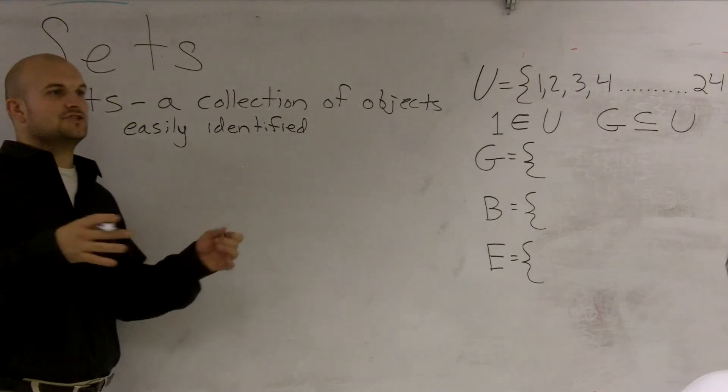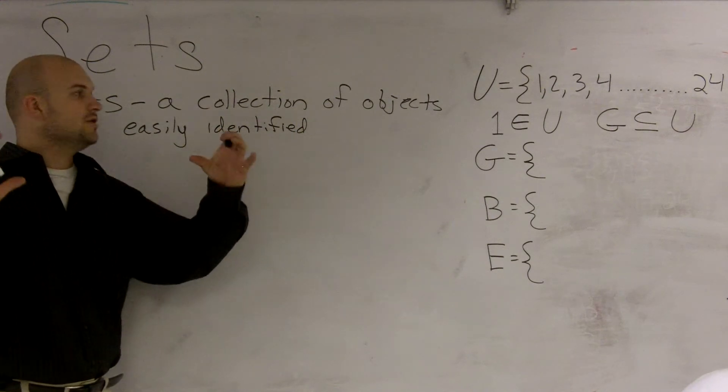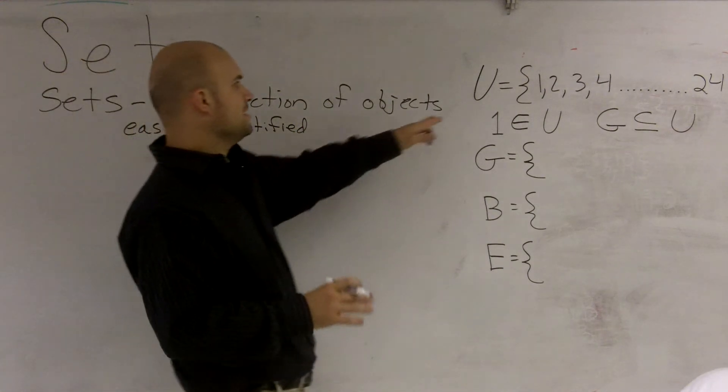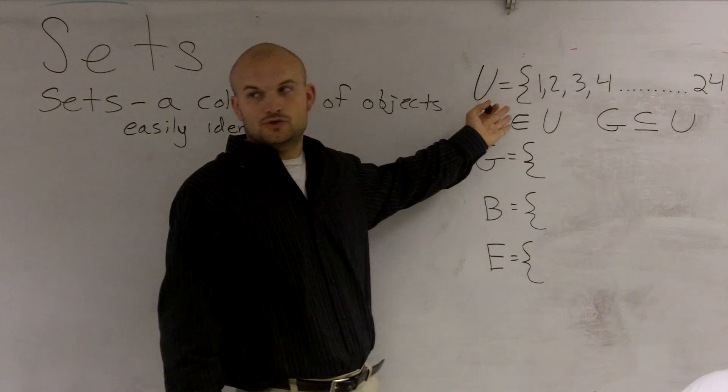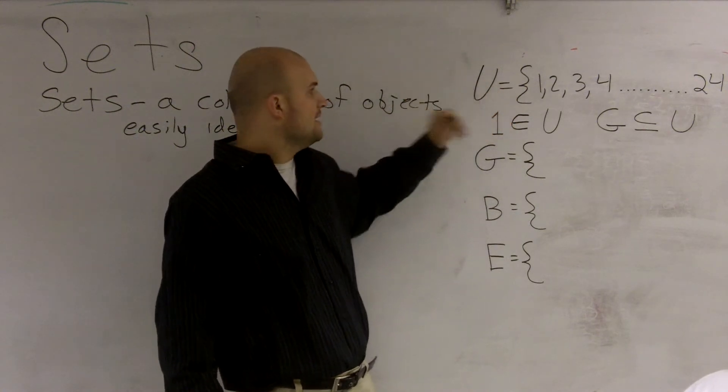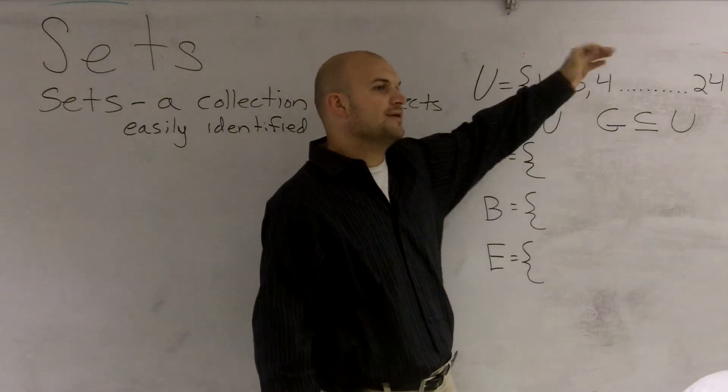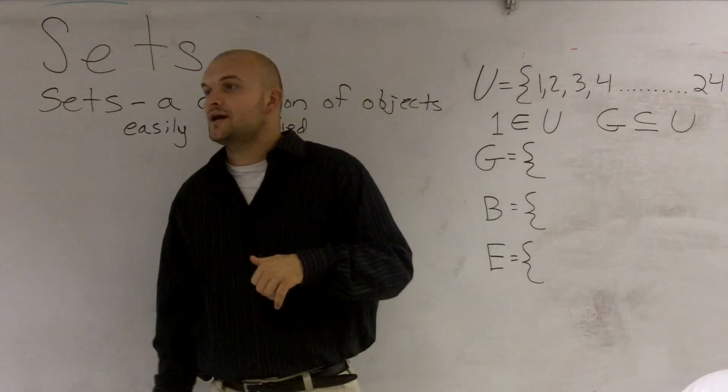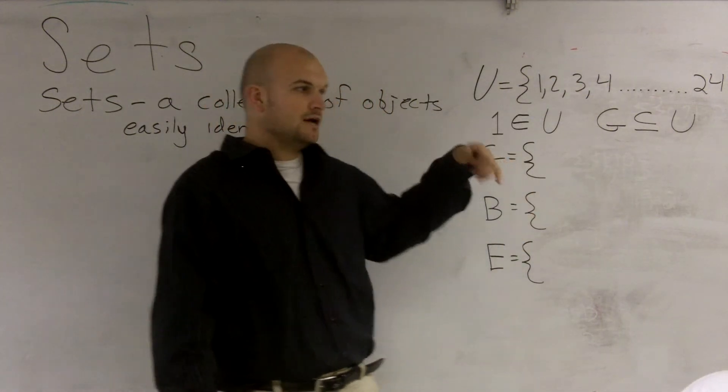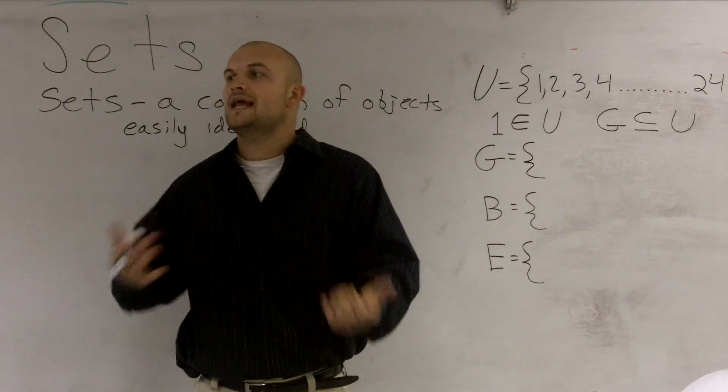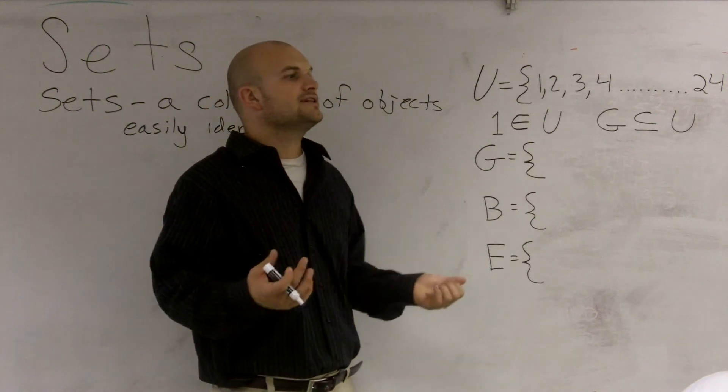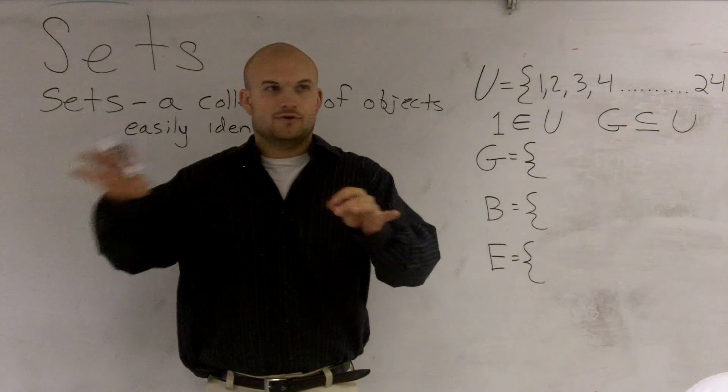And how we use sets is usually we like to put them around brackets. Over here is a set I call the U, the universe, or the universal set. And what this set is, this is a set of numbers 1, 2, all the way up to 24. You could also have a set of objects, a set of letters, a set of names. What we're going to do in this class is I gave each one of you a number, correct?